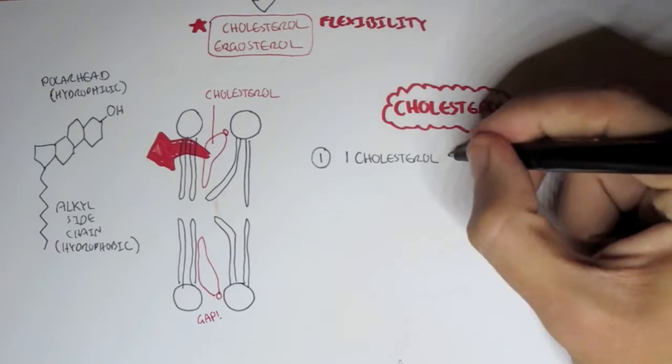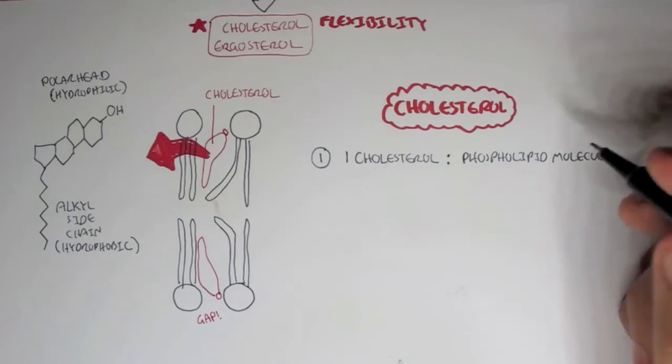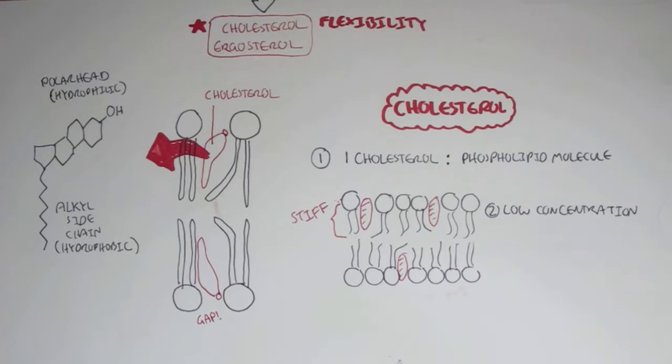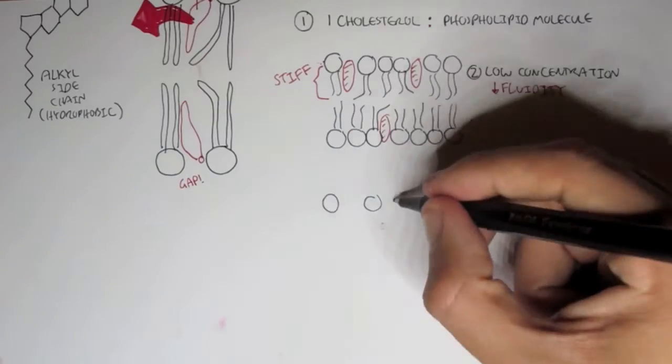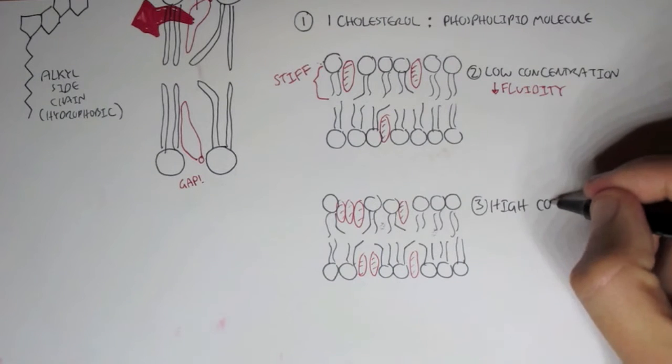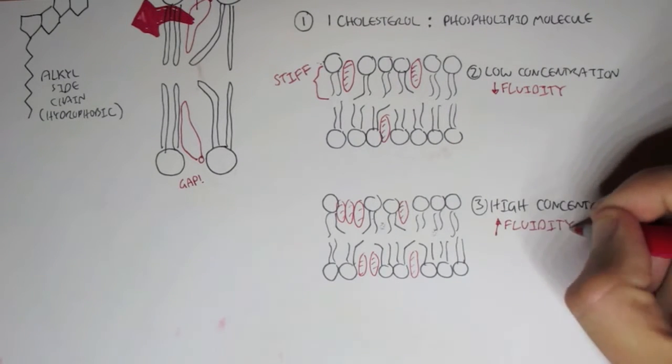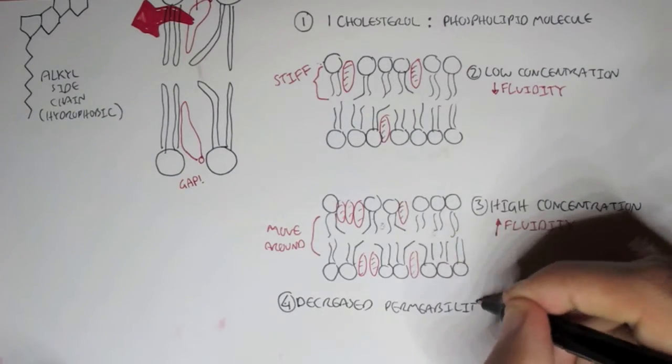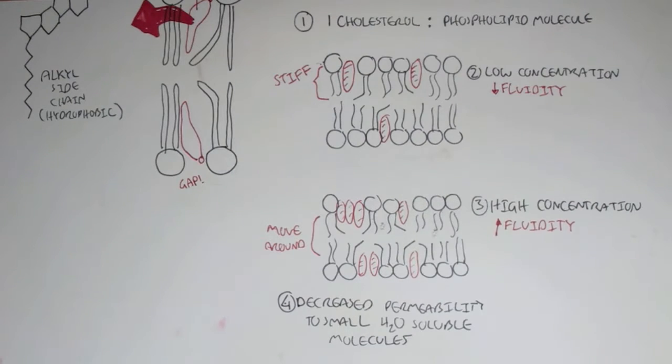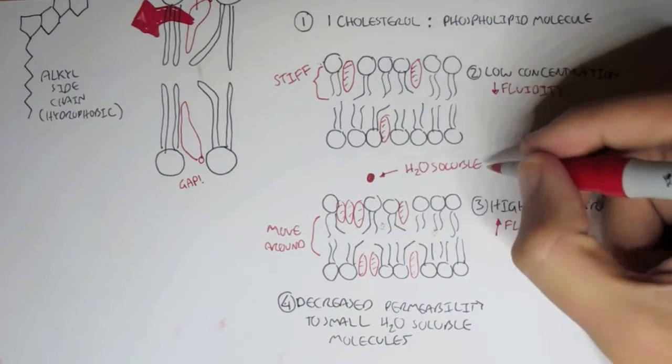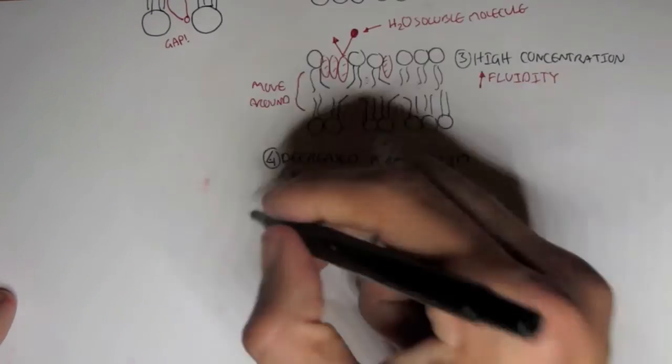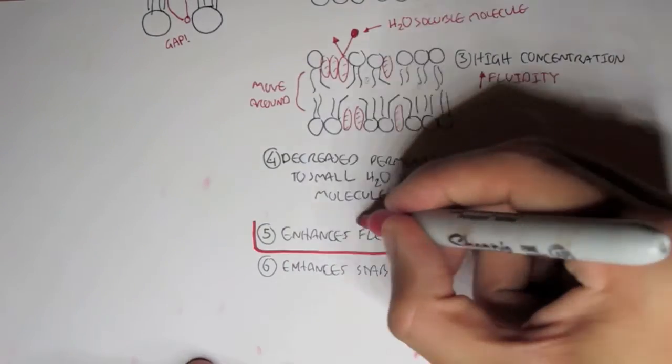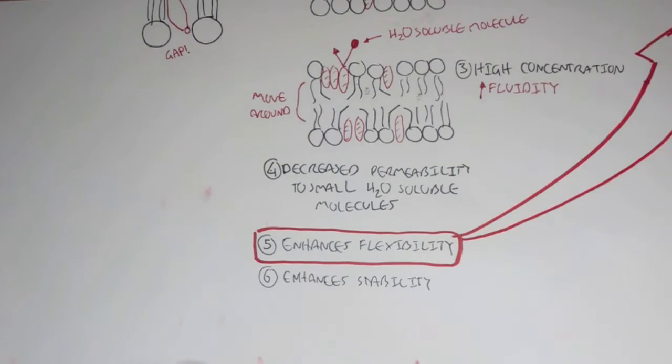Some facts about cholesterol. There can be one cholesterol molecule per phospholipid molecule in the membrane. When cholesterol binds to the kinks, it stiffens this area. Low concentration of cholesterol decreases fluidity in the membrane. However, high concentrations of cholesterol increases fluidity in the membrane, so this section is able to move around and are more flexible. Also, cholesterol decreases permeability to small water-soluble molecules. Importantly, cholesterol enhances flexibility. Cholesterol also enhances stability.